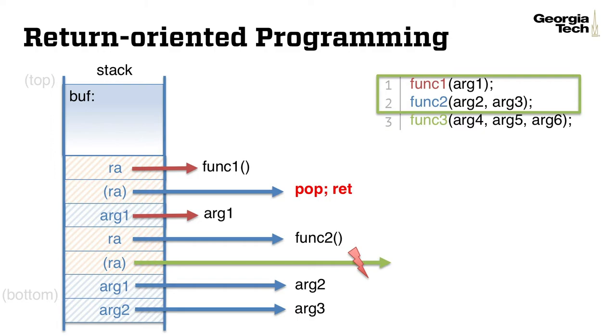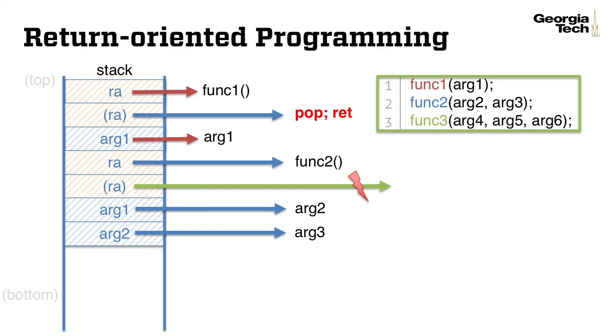When function 2 returns, we can continue to hijack its execution to another problem. Instead of executing function 3, similar to what we did before, we can redirect its execution to another pop gadget, pop-pop-return. By doing so, we can reconstruct the stack once more by popping argument 2 and argument 3.